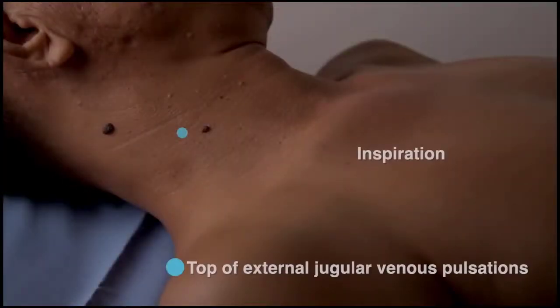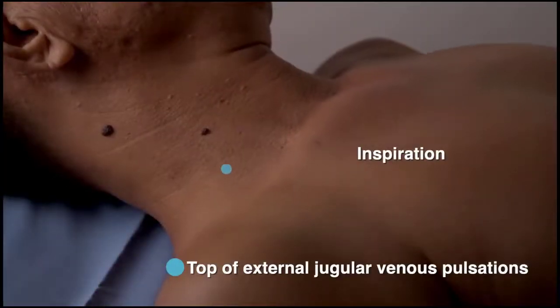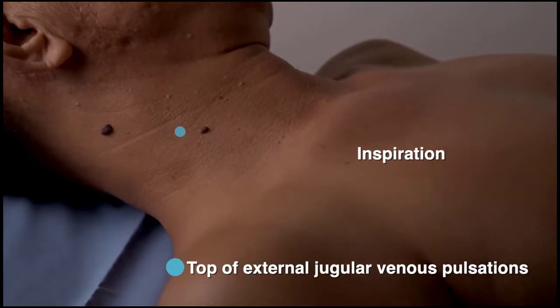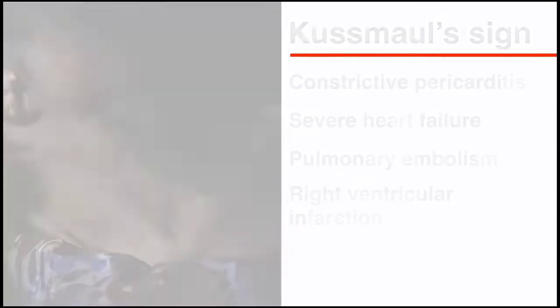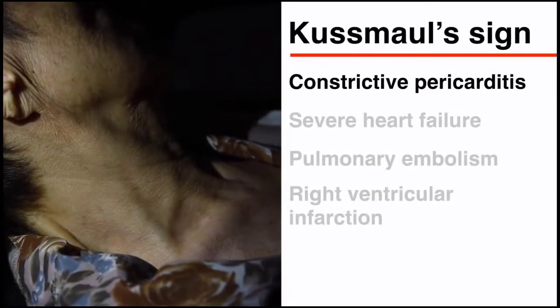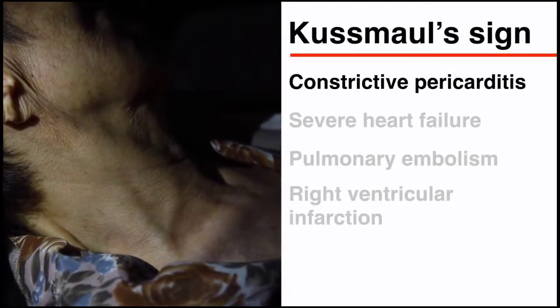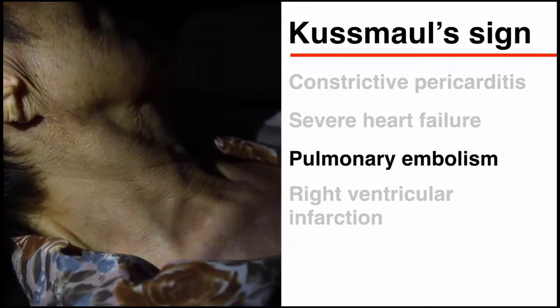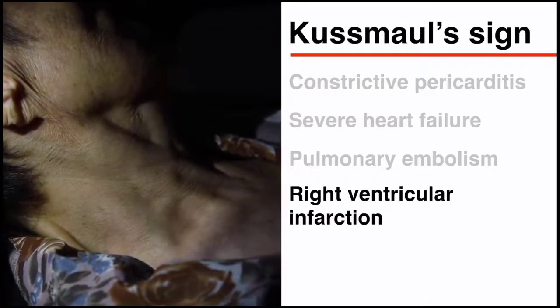Paradoxical elevation of the jugular venous pressure during inspiration is called Kussmaul's sign. In a healthy person, venous pressure decreases during inspiration because pressure on the right side of the heart falls as intrathoracic pressure decreases. The differential diagnosis for Kussmaul's sign includes constrictive pericarditis, severe heart failure, pulmonary embolism, and right ventricular infarction.